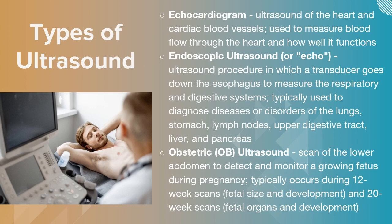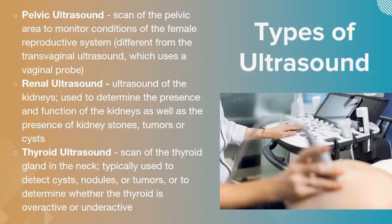Obstetric ultrasounds scan the lower abdomen to detect and monitor the growing baby during pregnancy, including the placenta and gross anomalies. They typically occur around 12 weeks gestation and again at 20 weeks for an anatomy scan; if there are obvious concerns, they'll be done more frequently. A pelvic ultrasound is more for gynecological use and sometimes used in early pregnancy, typically with a transvaginal probe.